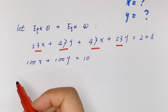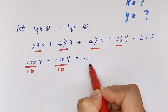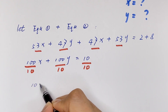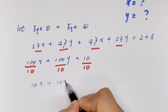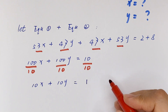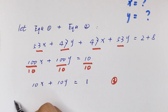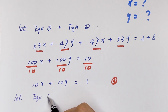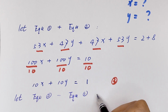We divide both sides by 10. It will be 10x plus 10y is equal to 1. We let this equation 3. Now we let equation 2 minus equation 1.